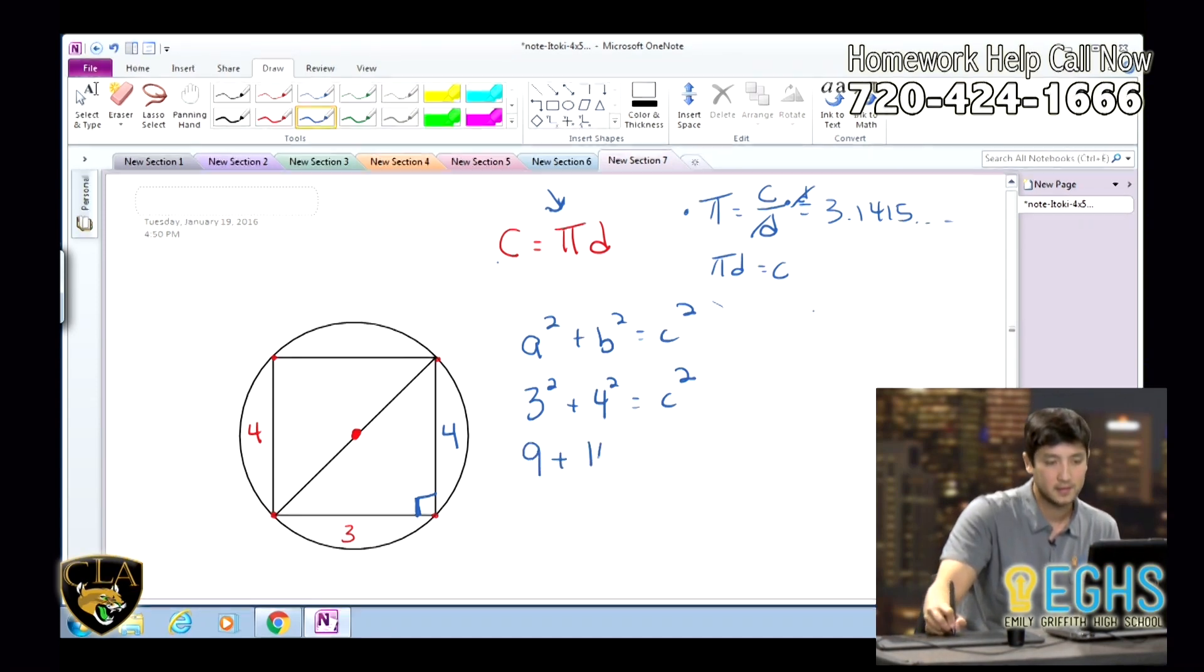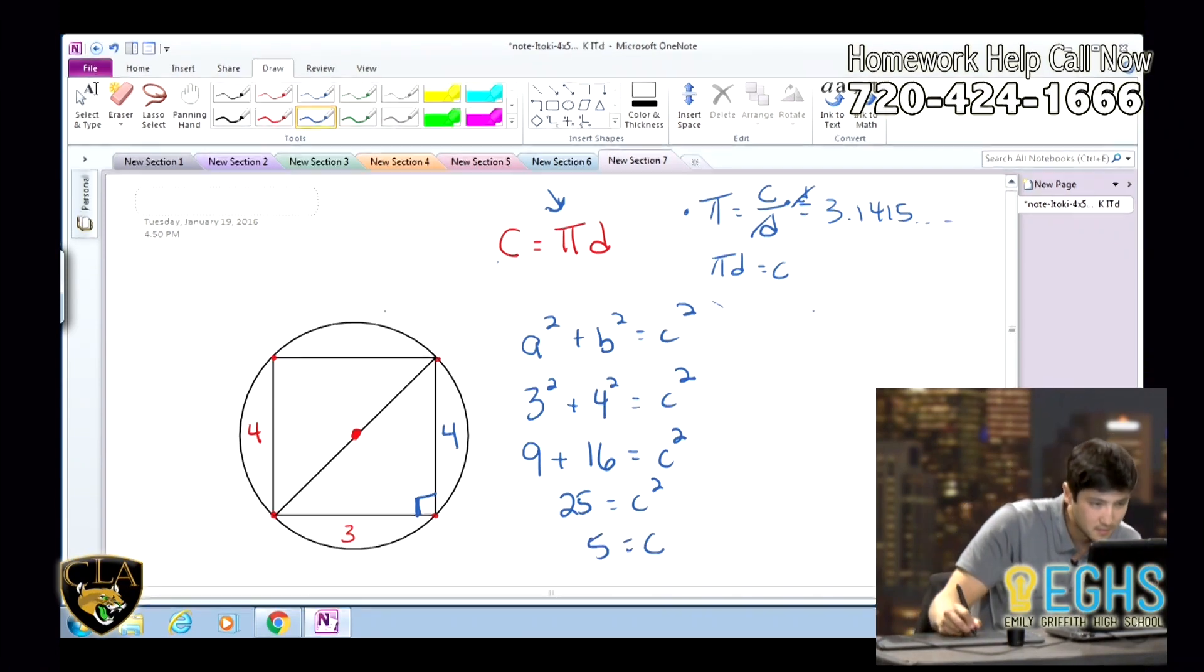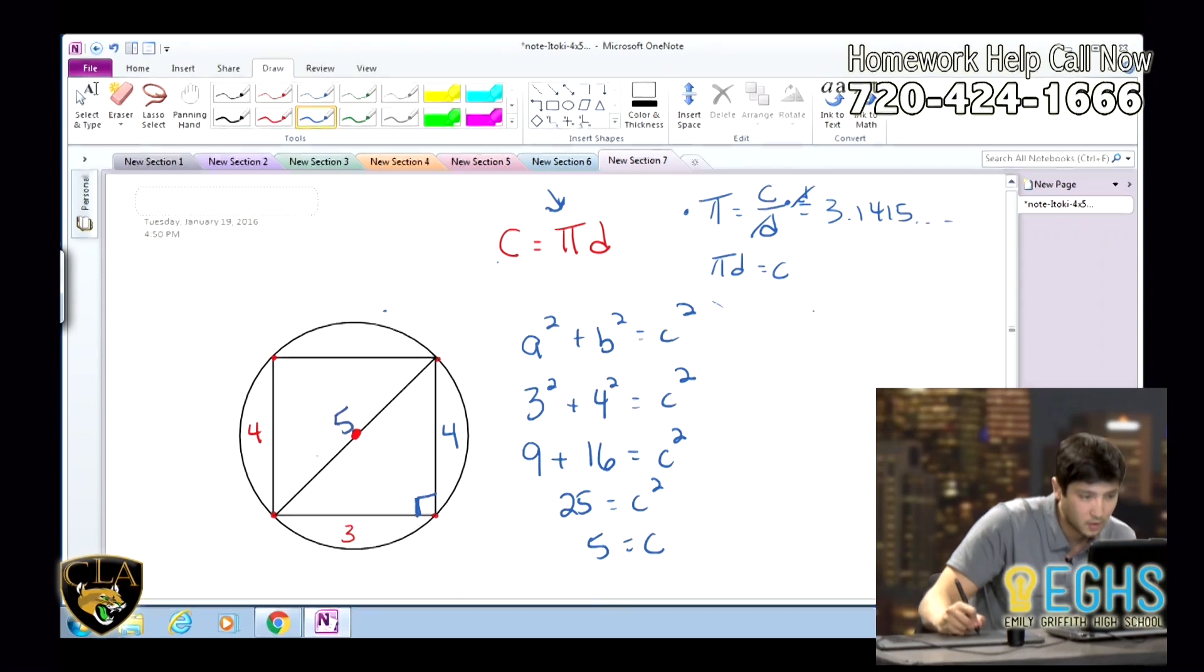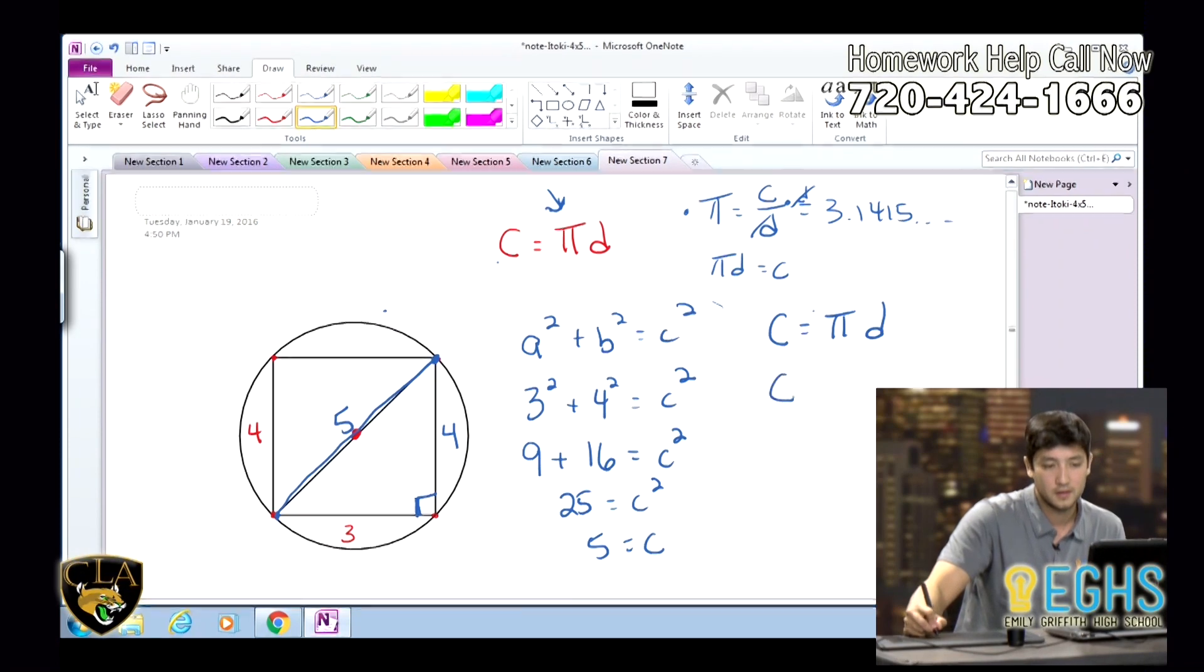So, we get nine plus sixteen equals c squared. And we just continue solving and you end up with c equals five. Is that making sense? Yeah. Okay. So, now you know this entire diameter from here all the way over here is five. We know the circumference is pi times the diameter. So, the circumference of this circle is going to be five pi.